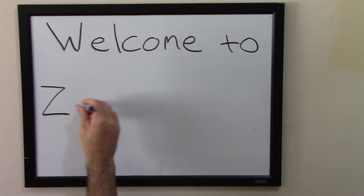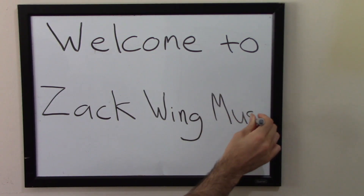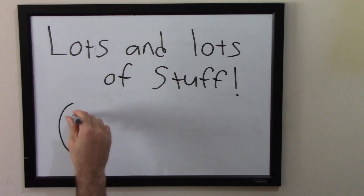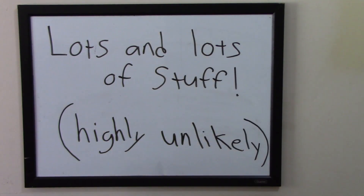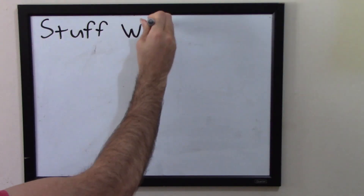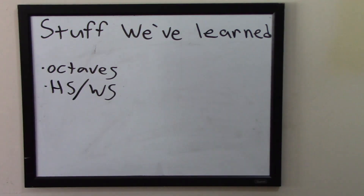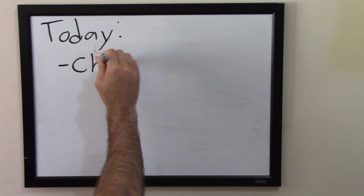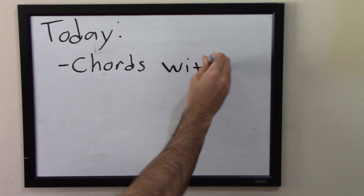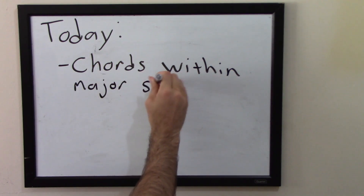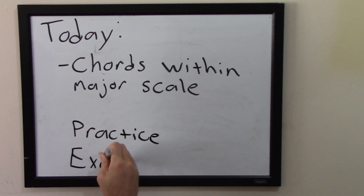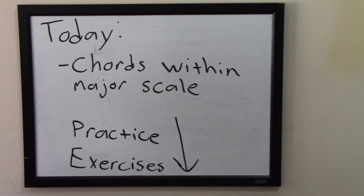Hello YouTube, this is Zach, and if you have been tracking along in this video series, we have covered quite a bit of stuff. I highly doubt anyone is actually tracking along, but it just makes me feel good to think about that possibility. Anywho, we have covered octaves, the chromatic scale, whole steps, half steps, the major scale, intervals, triads, and seventh chords. Today we're going to talk about those triads and chords that naturally occur within a major scale. As always, I'm going to have practice exercise-y stuff in the description box below so that you can master the material.